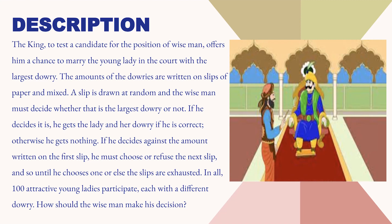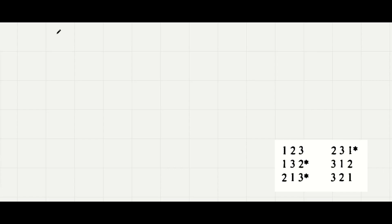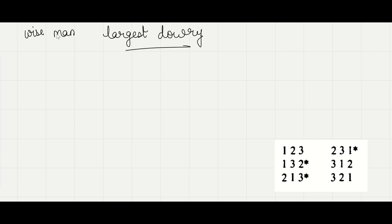Now let's see the solution to the problem. The wise man has to make a strategy for choosing the largest dowry among the 100 slips he has been given. Let us first do some smaller problems.